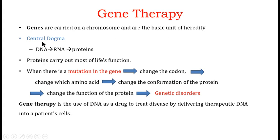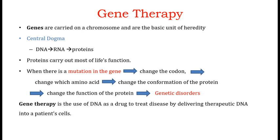If you remember the central dogma, it states that DNA is converted into RNA, and RNA is converted into proteins — specifically, messenger RNA is converted into proteins. This means that genes are responsible for making functional proteins, and it is these functional proteins which carry out most of the life functions. These proteins act as enzymes, as structural components, and as signaling molecules in the body.